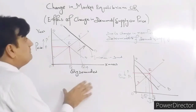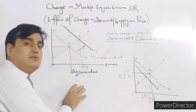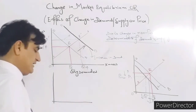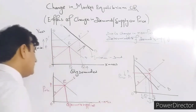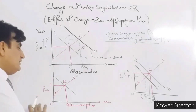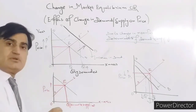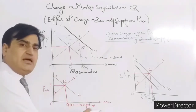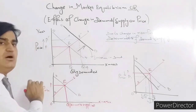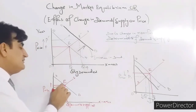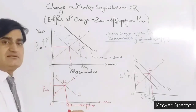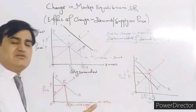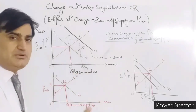To summarize: when demand increases, quantity demanded increases and price goes up; when demand decreases, quantity demanded decreases and price goes down. That is the effect of change in demand on price and quantity. Now we will see how a change in supply affects price. Here DD is the demand curve, SS is the supply curve, quantity is on the X axis, price is on the Y axis, and E is the equilibrium point.